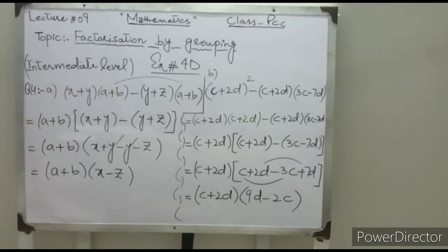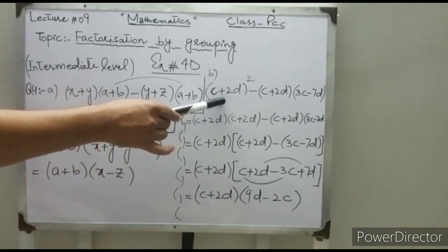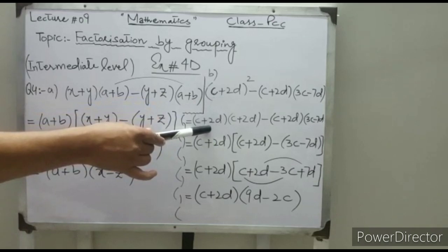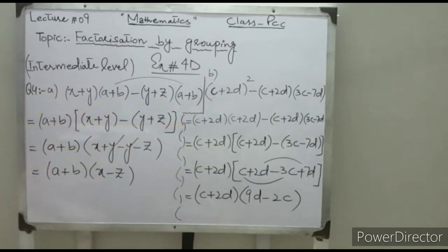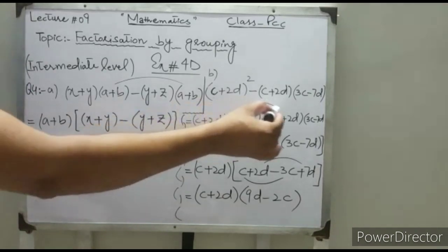In part B, we have (c plus 2d)² minus (c plus 2d)(3c minus 7d). We may write (c plus 2d)² as (c plus 2d)(c plus 2d) minus (c plus 2d)(3c minus 7d). Once again, (c plus 2d) is a common factor.